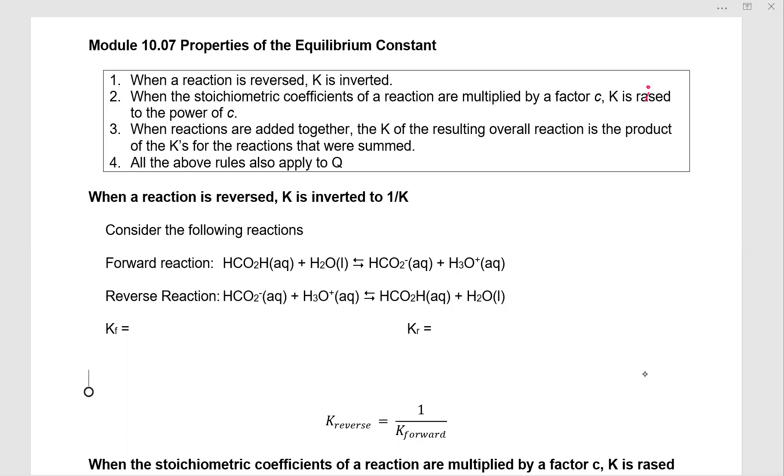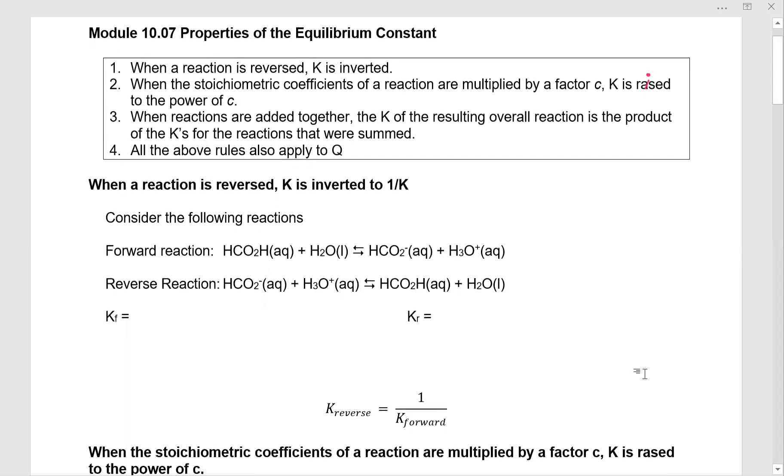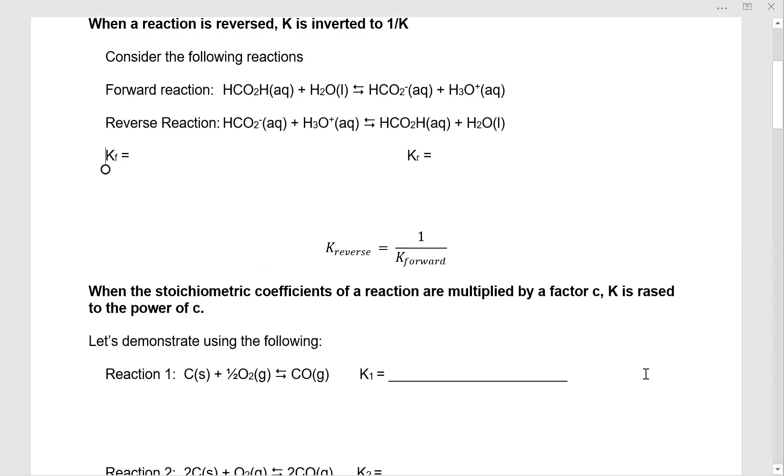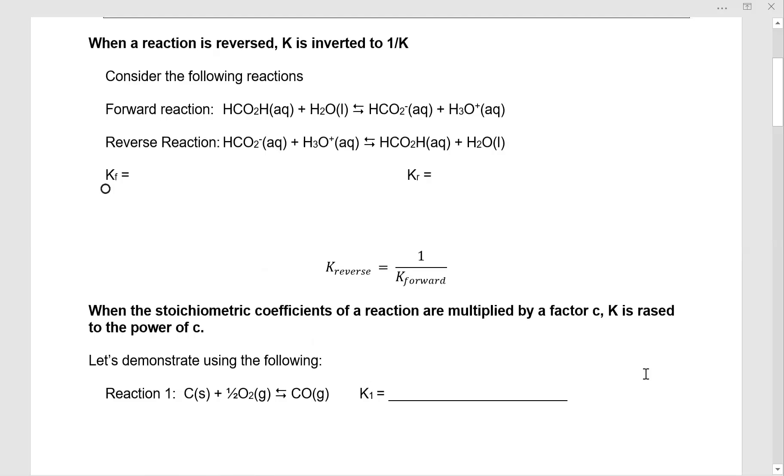And then all of the above rules also apply to Q. So we're going to go through these rules one at a time. When a reaction is reversed, K is inverted to one over K.